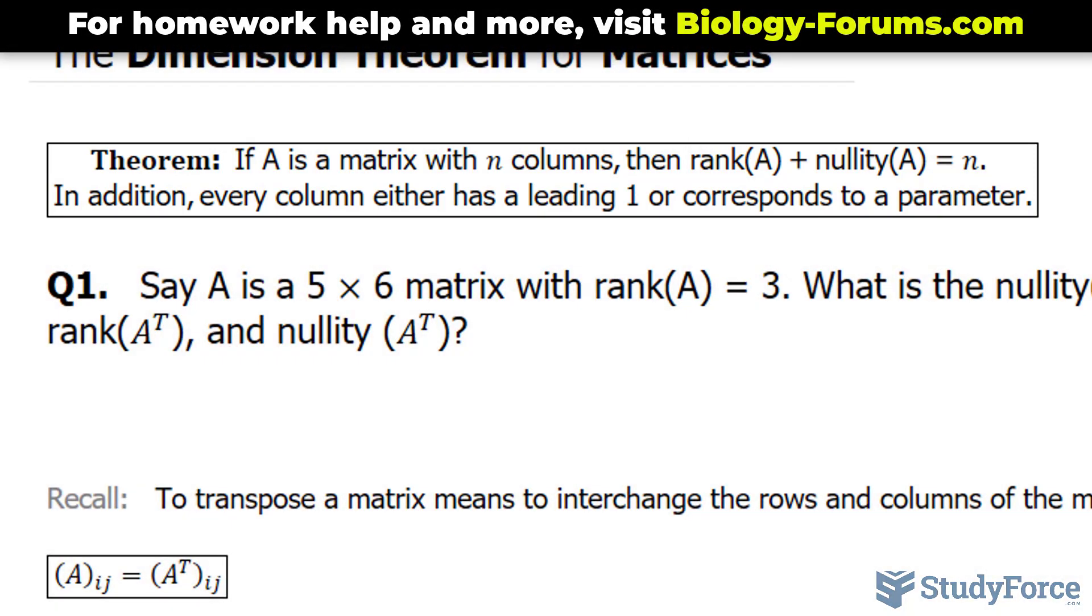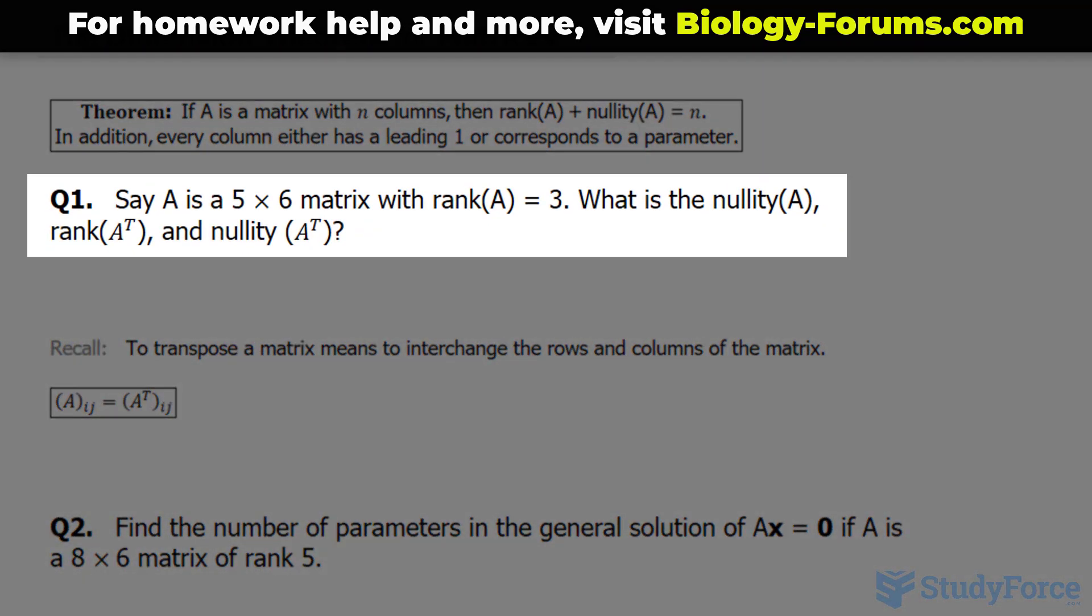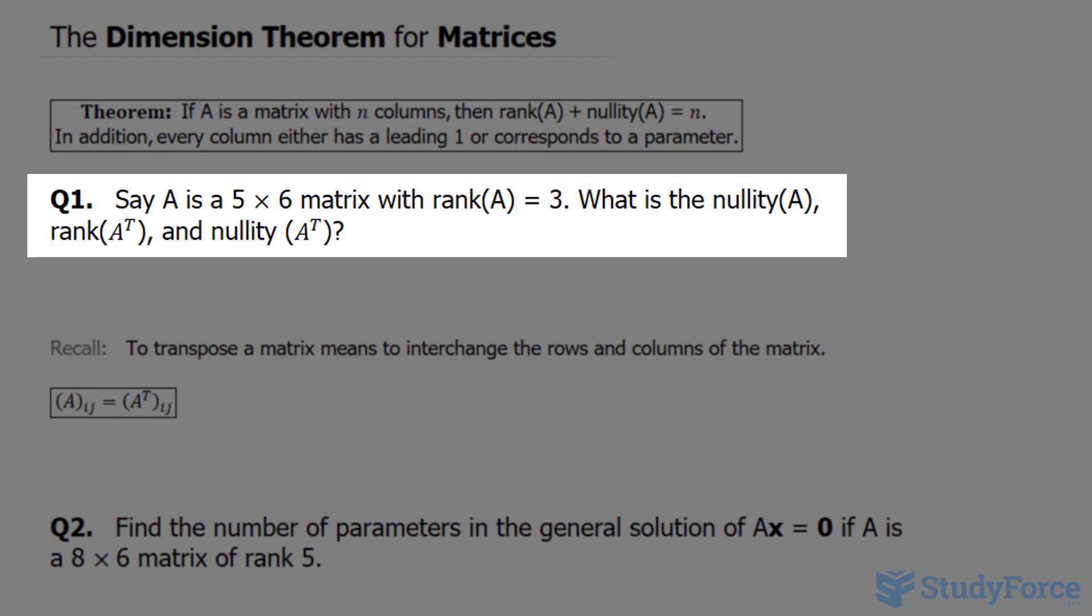Question 1 reads: Let's say we have a matrix A and it's 5 by 6, so 5 rows by 6 columns, and it has a rank of 3. What is the nullity A, the rank of the transpose of A, and the nullity of the transpose of A?